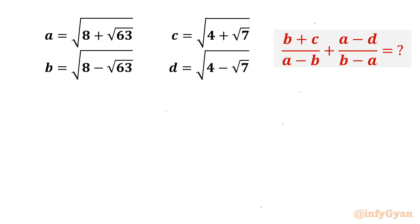Welcome back to Infigyan friends. In this video we are going to take up one very interesting radical puzzle for which we have to simplify the algebraic expression (b+c)/(a-b) + (a-d)/(b-a). Here a = √(8+√63), b = √(8-√63), c = √(4+√7), and d = √(4-√7).